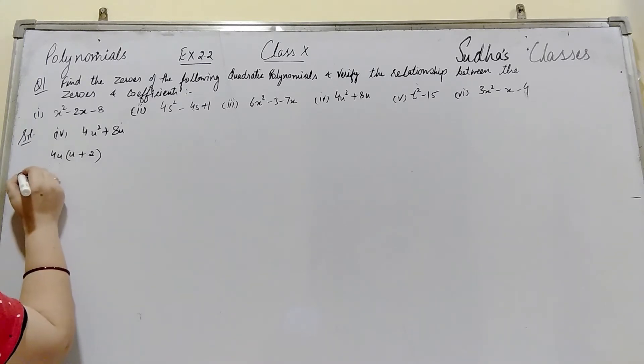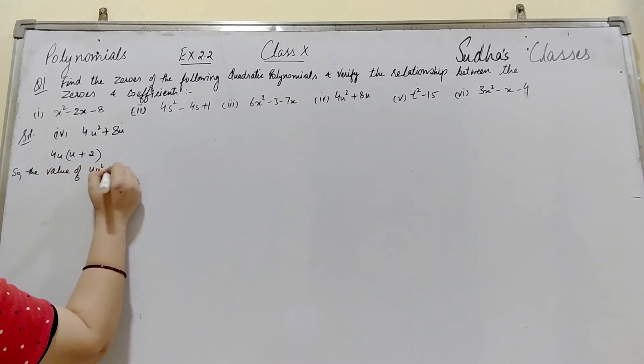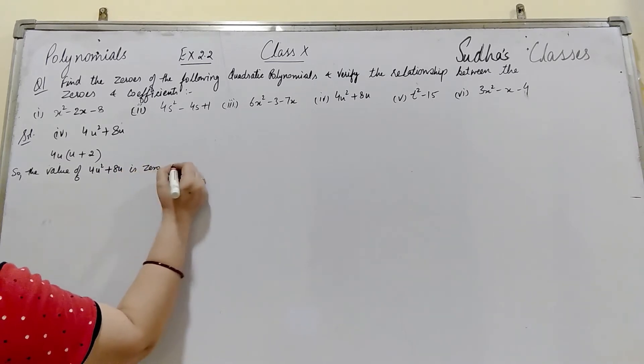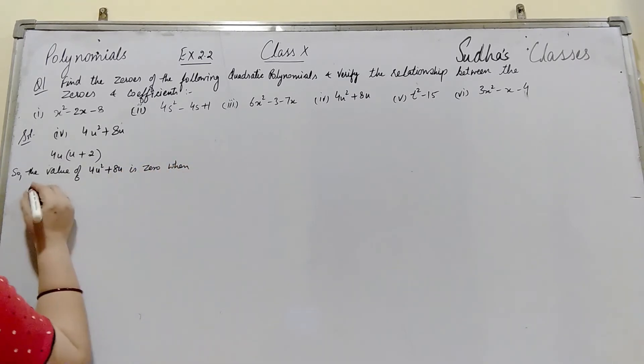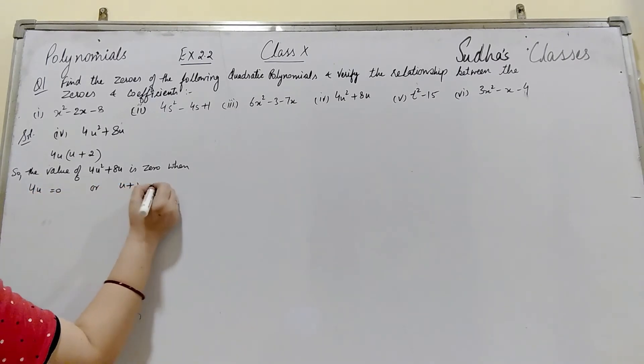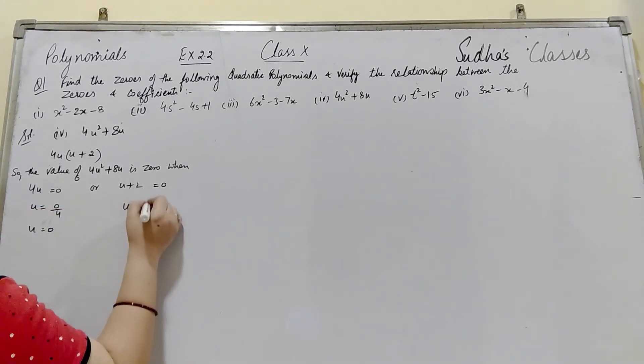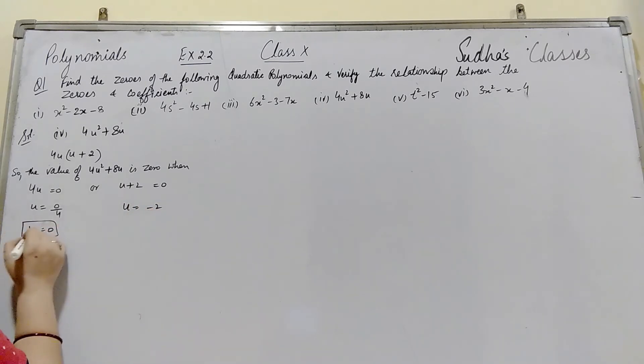So the value of 4u² + 8u is 0 when 4u = 0 and u + 2 = 0. We will write: for 4u = 0, u = 0; for u + 2 = 0, u = -2. Then we have two zeros: u = 0 and u = -2.